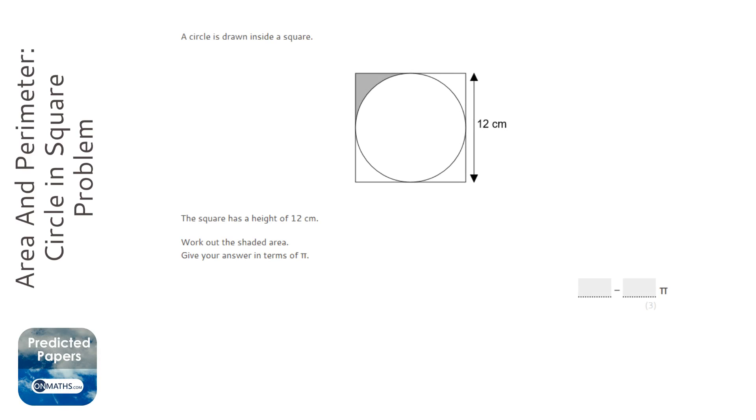This is quite a complicated looking question, but the most important thing is we break it down. It says the circle is drawn inside a square. The square has a height of 12 centimeters. The first thing to notice is it's a square, therefore the width is also going to be 12.